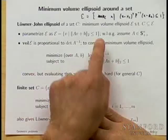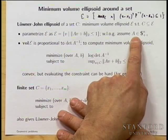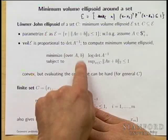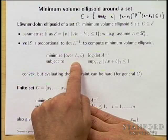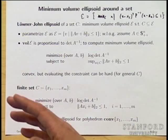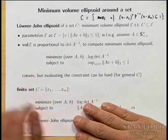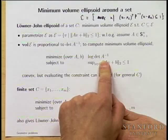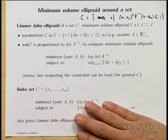This problem is actually, correctly, the Löwner-John ellipsoid problem even when A is not symmetric, because log det A inverse is the log of the volume of the ellipsoid up to a constant. When A is symmetric positive definite, the problem is convex and we can solve it.